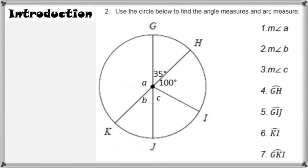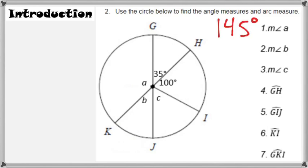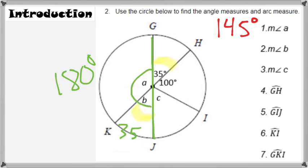Here are some practice problems to test your understanding. I recommend pausing the video and trying to answer the questions, then resuming to hear the explanation. The measure of angle A is 145 degrees — we get that because 35 degrees and angle B are opposite from each other. Since the entire semicircle is 180 degrees, simply do 180 minus 35 and you get 145 degrees for the measure of angle A.